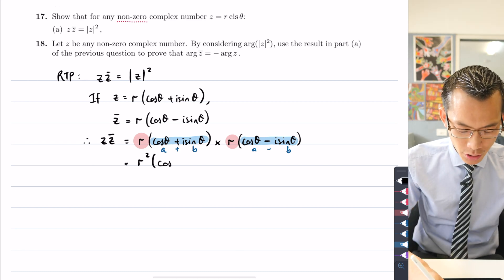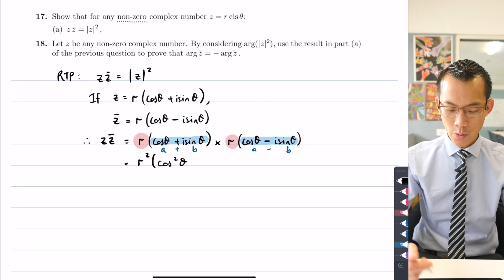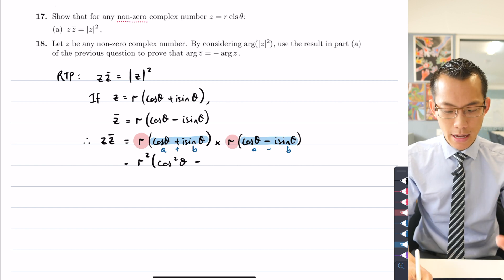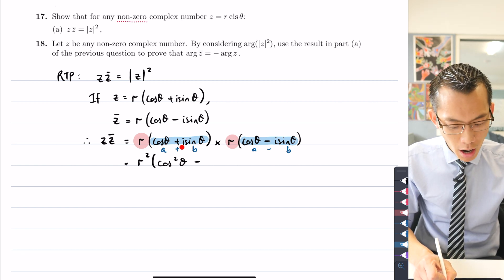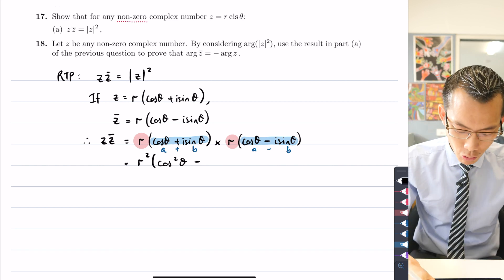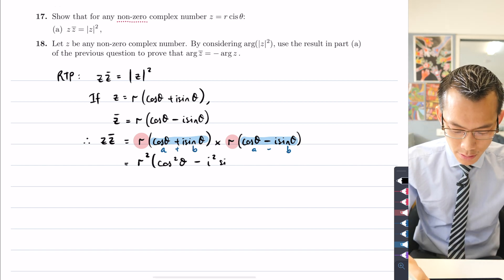So what do we get from that? Cos squared theta, that's my a squared, then minus b squared. But in this case we just have to be a little bit careful because the b includes the i and the sine theta. So therefore b squared will be i squared sine squared theta.